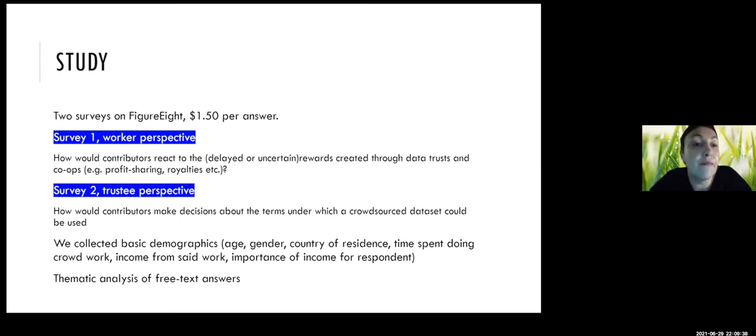So we started the work in a project called Crowd, which had finished in 2019, where we had a much stronger focus on citizen sensing alone. But practically what we've done first is a study at figure eight back then, where we tried to understand how crowds understand this concept of data governance and data trust. So we've done two surveys, one that took a contributor perspective and wanted to understand how would people who label data, collect data, how would they react to additional delayed or uncertain rewards.